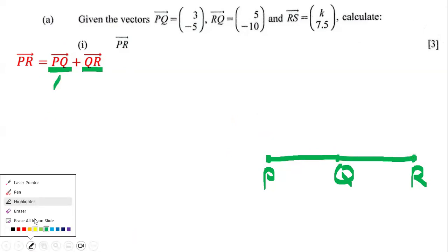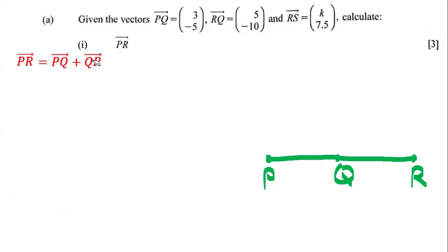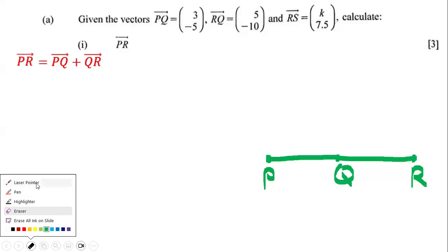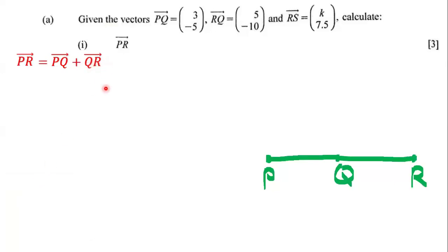The question is: we don't have QR — we have PQ, which is (3, -5), but we don't have QR; we have RQ. So what we have to do is switch the letters. Instead of writing QR, we write RQ, but there is a price for doing that. The price for switching the letters is you have to put a negative sign out front.